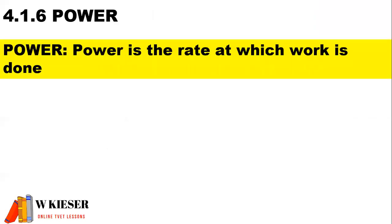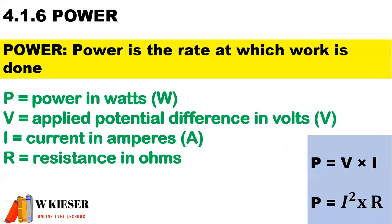Power is the rate at which work is done. If we look at our formulas available on the formula sheet, there is more than one way to calculate power. The units for power is watts, the units for voltage is volts, the units for current is amperes, and the units for resistance is ohms.